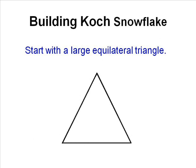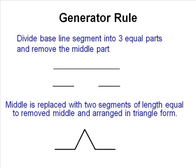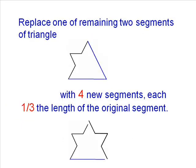The simplest fractal is the Koch snowflake. We begin with an equilateral triangle. The base is divided into three equal parts, and the middle part is removed.